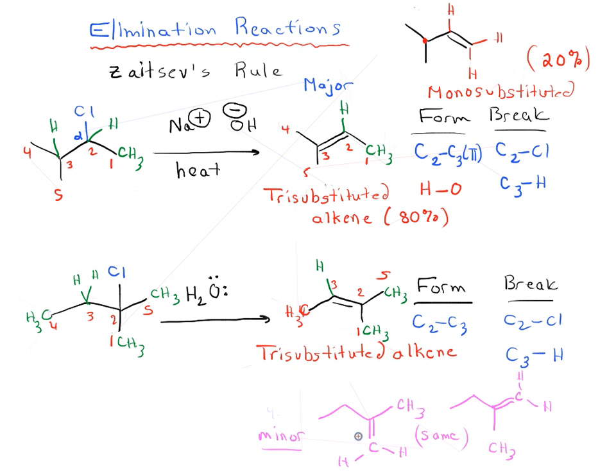And looking at our minor product, we have, it's attached to two hydrogens and two carbons. Of course, these are both the same molecule, two hydrogens, two carbons. So these are di-substituted. This is a di-substituted alkene.